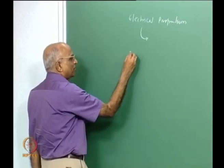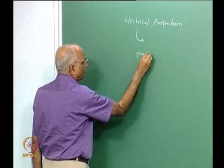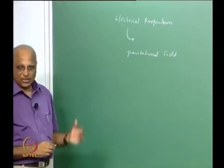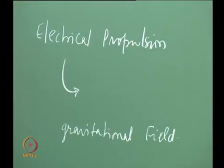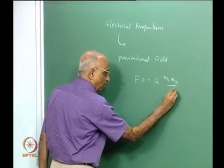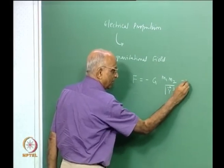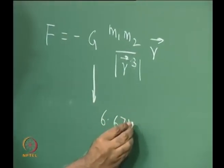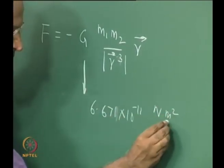I go back a little bit and ask myself one question. We talked in terms of gravitational field — we covered this, we started with this. We said planets are moving. Newton saw the movement of the planets, he saw an apple fall, and he formulated the universal law for gravitation: F = −G·m₁·m₂/r². If I want to put it in terms of direction, I put a vector here, a cube here, and then the vector. The gravitational constant is 6.671 × 10⁻¹¹ Newton·m²/kg².